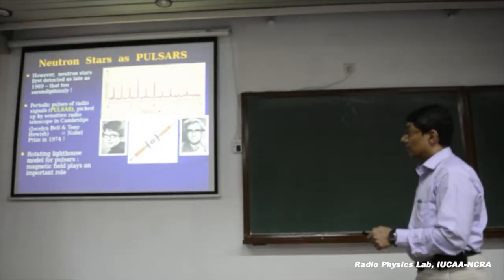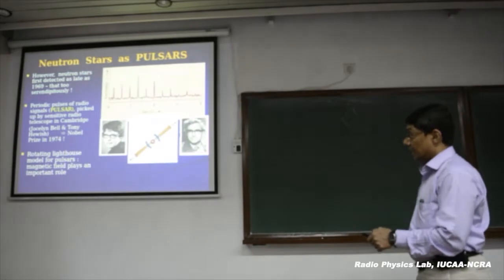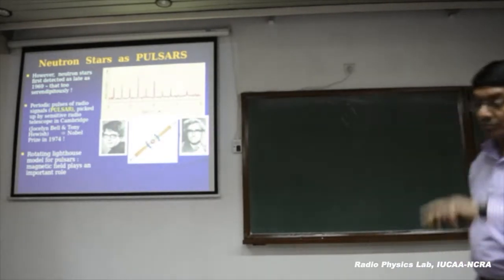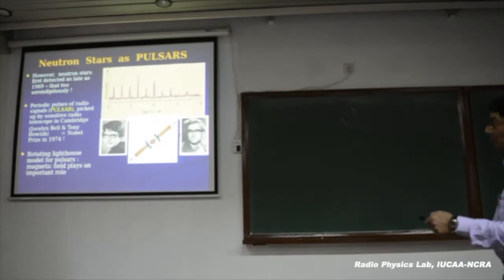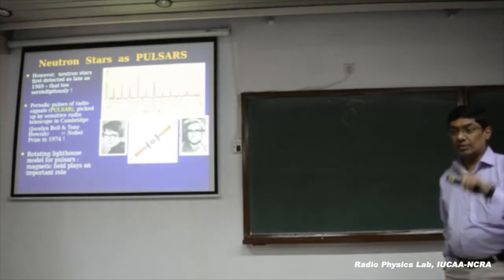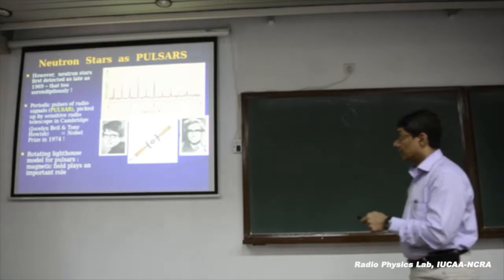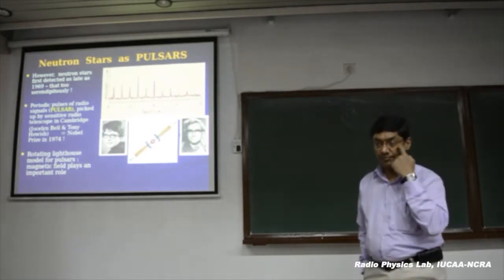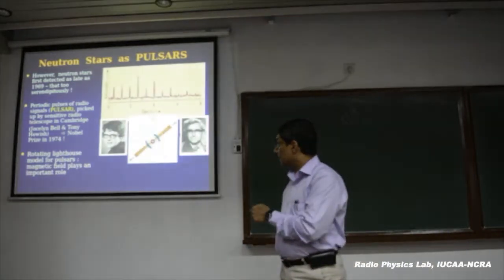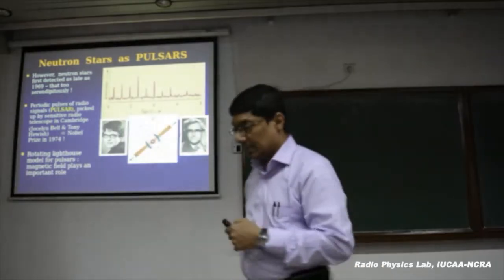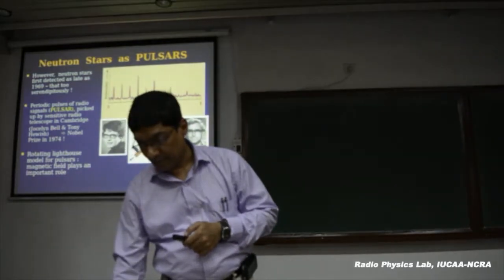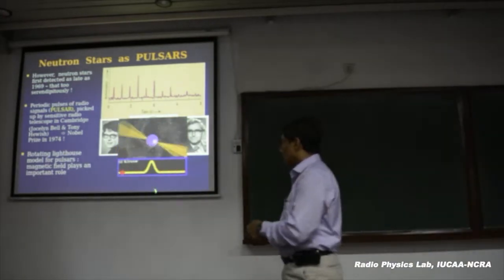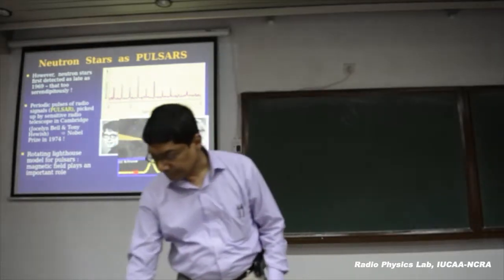In the lighthouse model, the neutron star is rotating around the rotation axis. It has a very strong magnetic field, most likely a dipolar structure — just like a bar magnet — with a north pole and south pole that are not aligned with the rotation axis. Whenever this beam crosses our line of sight, we see a pulse. Just like a lighthouse, except in a lighthouse the angle between the rotation axis and the beam is 90 degrees, whereas in a neutron star it can be any angle.